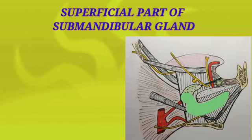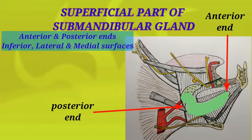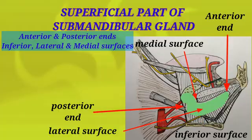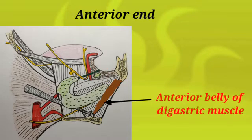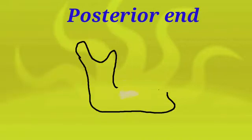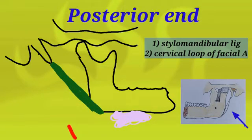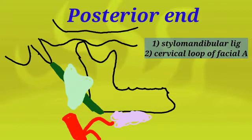The superficial part of the submandibular gland, present outside or lateral to the mylohyoid muscle, presents two ends and three surfaces. The two ends are the anterior end and posterior end, and the three surfaces are the inferior surface, lateral surface, and medial surface. The anterior end is related to the anterior belly of the digastric muscle, which is present superficial to the mylohyoid muscle. The posterior end is related to two structures: the stylomandibular ligament and the cervical loop of the facial artery. The stylomandibular ligament has one end attached to the styloid process of the temporal bone and the other end attached to the angle of the mandible. This ligament separates the parotid gland, present posterior to it, from the superficial part of the submandibular gland, present anterior to it.